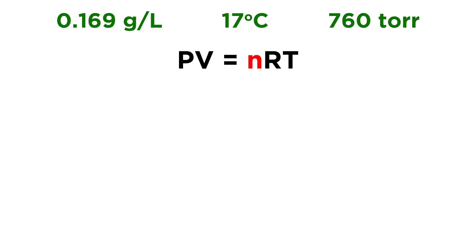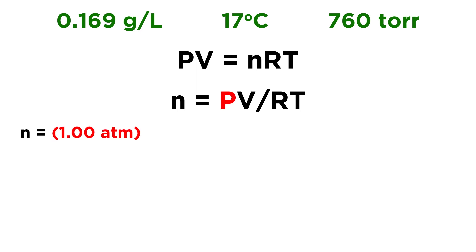We don't have moles, so we are going to want to get moles. Let's solve for moles. n is going to be equal to PV over RT. Now let's plug in what we know. We have 1.00 atmospheres, because we're going to have to convert from torr to atmospheres — 760 torr is equal to 1 atmosphere.